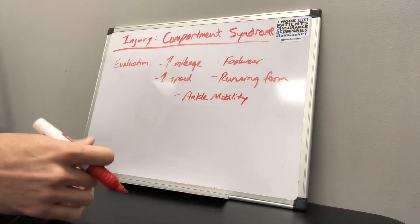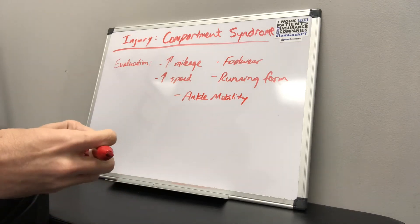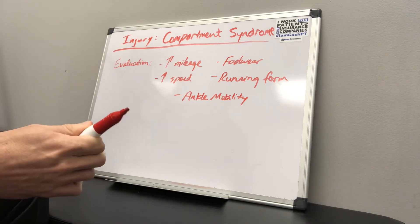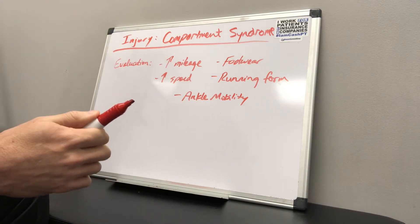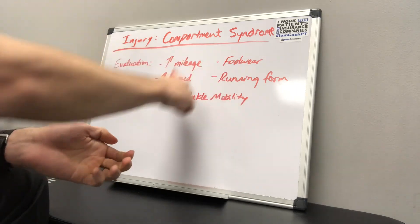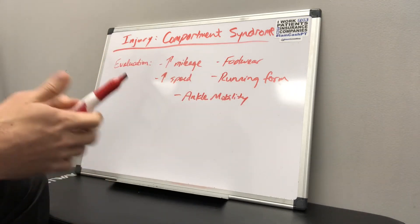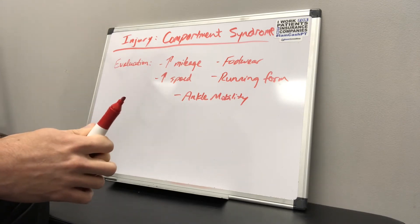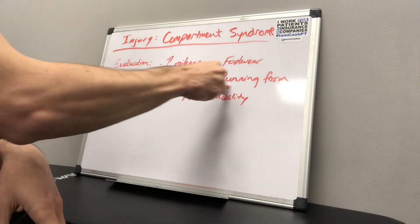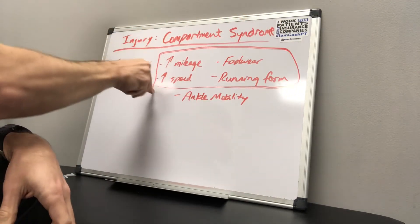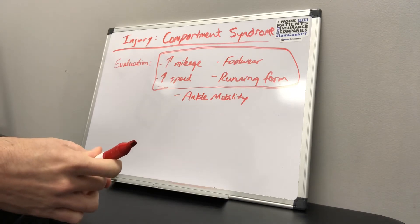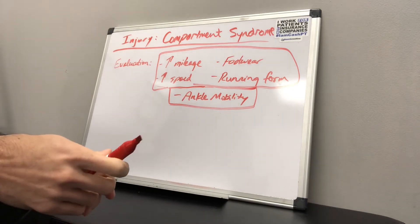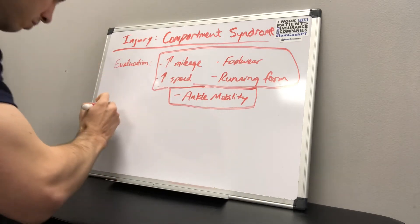This runner also had really poor ankle mobility, especially on the affected leg. All of these different factors most likely led to this compartment syndrome. So we addressed the training changes and then in the office we worked on how to improve that ankle mobility.